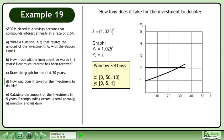We can solve this by graphing. Graph each side of the equation with the window settings shown. The point of intersection is 28, 2. The investment will double in 28 years.